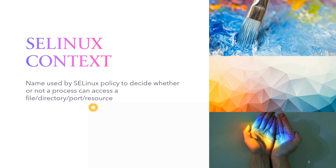Imagine I'm a user and I have two different files. I have permission to access both files and both files have the same permission. But if their contexts are different, I may be able to access one but not the other. If the context I am looking for does not match, then I cannot access that particular file. SE Linux context is nothing but a name used by SE Linux policy to decide whether or not we can access a particular process, resource, file, or directory.